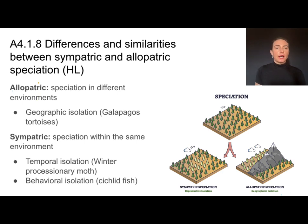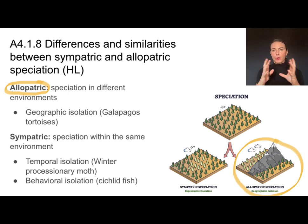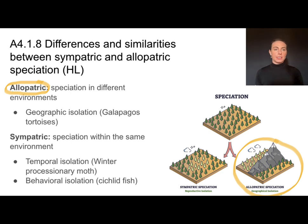That isolation can either be allopatric, which means there's some kind of physical barrier that separates two populations — also referred to as geographic isolation. Examples include a mountain range, a river, or a lava flow separating two groups. In the example of the Galapagos tortoise, the water between different islands separates two groups, leading to speciation. That is allopatric speciation.